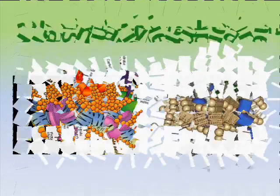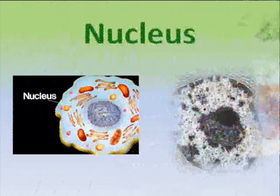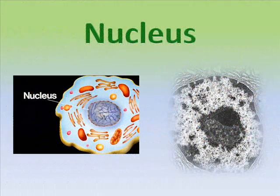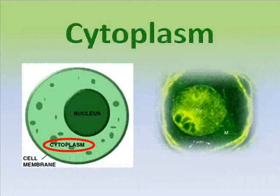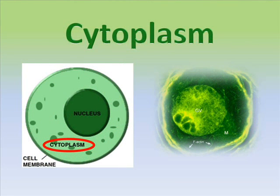Like our brain, an organelle called the nucleus controls roles and functions inside the cell. Holding all of these organelles in place, there is a gel-like fluid called cytoplasm.